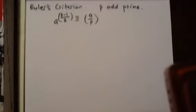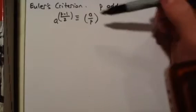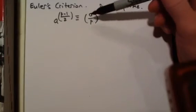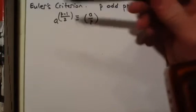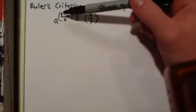Let's prove Euler's criterion, which says that the Legendre symbol of A over P is congruent to A to the power of P minus 1 over 2.